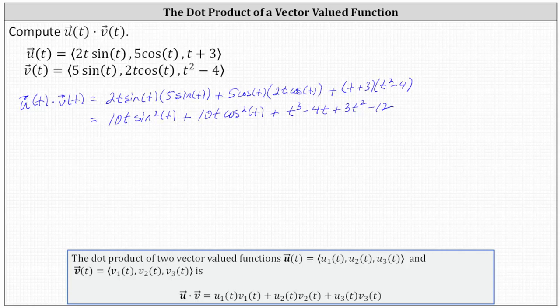Now if we focus on just the first two terms, notice there's a common factor of ten t. And if we factor out the ten t, we're left with ten t times the quantity sine squared t plus cosine squared t. And we should recognize the identity sine squared t plus cosine squared t is equal to one. So this simplifies to one.